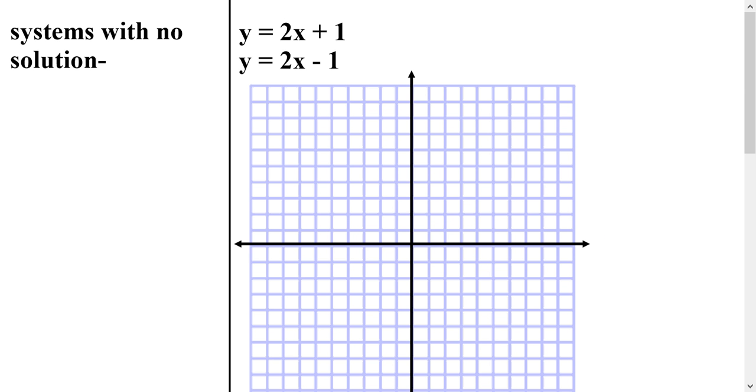Now sometimes you will have systems with no solution. So how could a system have no solution? Well, we know that the solution is the point where the two lines cross. So the only way that they could have no solution is if the lines don't cross, which means that they would have to be parallel. And if we look at the slopes of these lines, they both have a slope of 2. So these are going to be parallel. But I can prove that by graphing them.